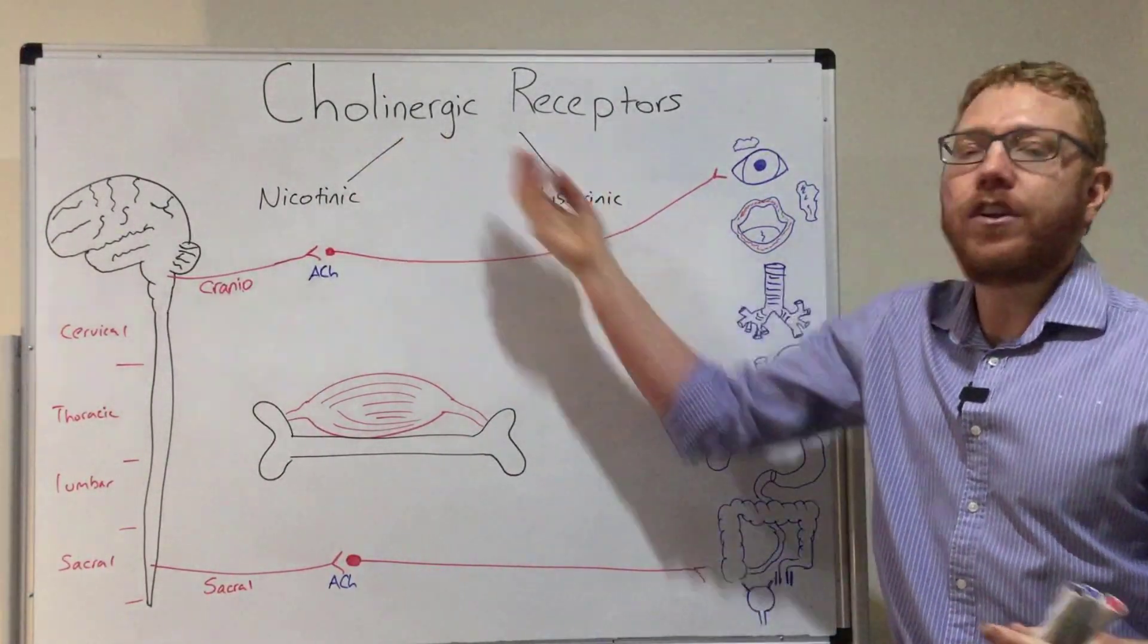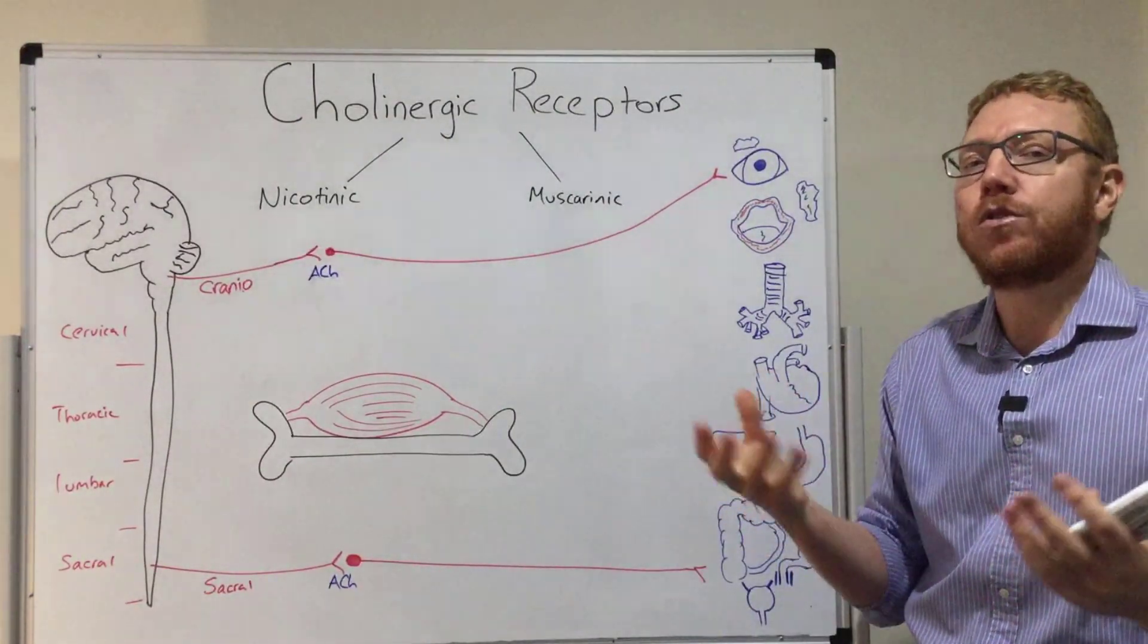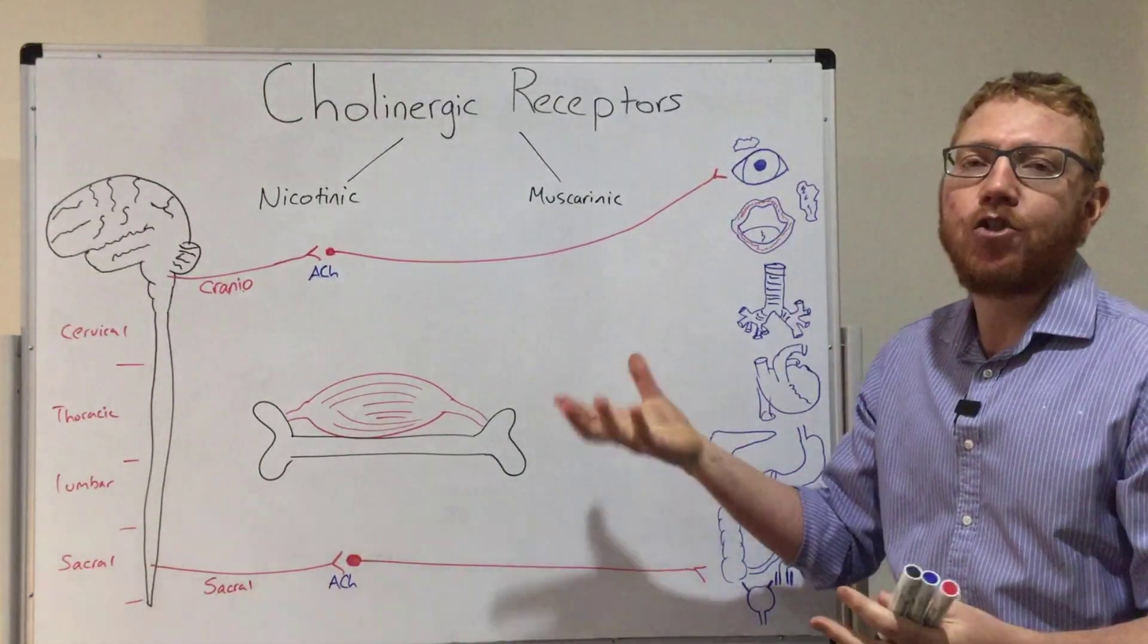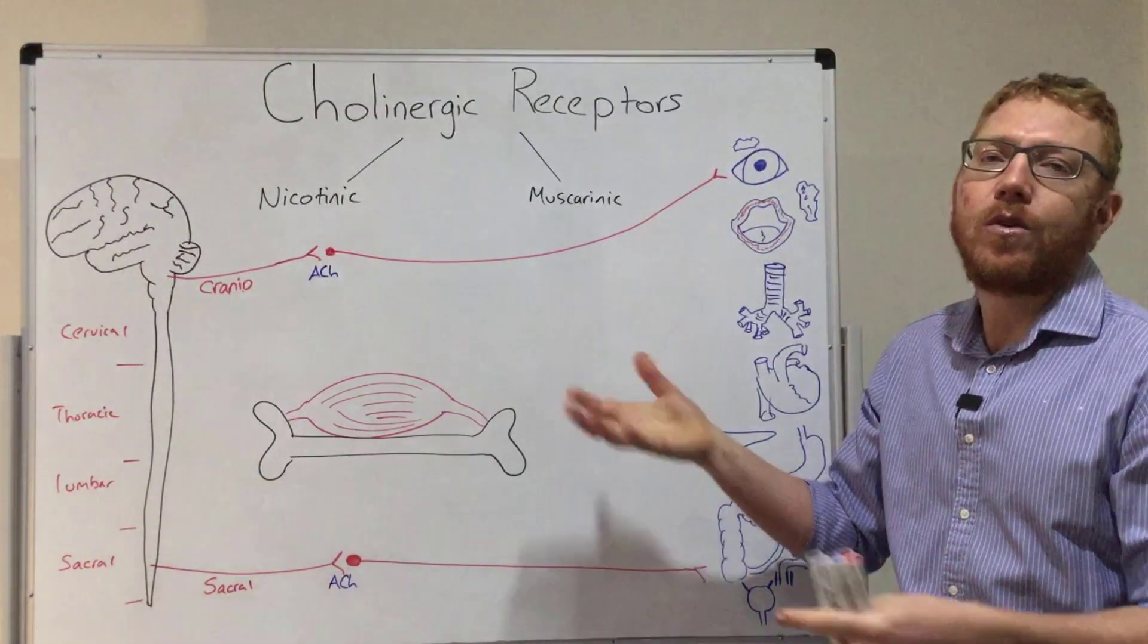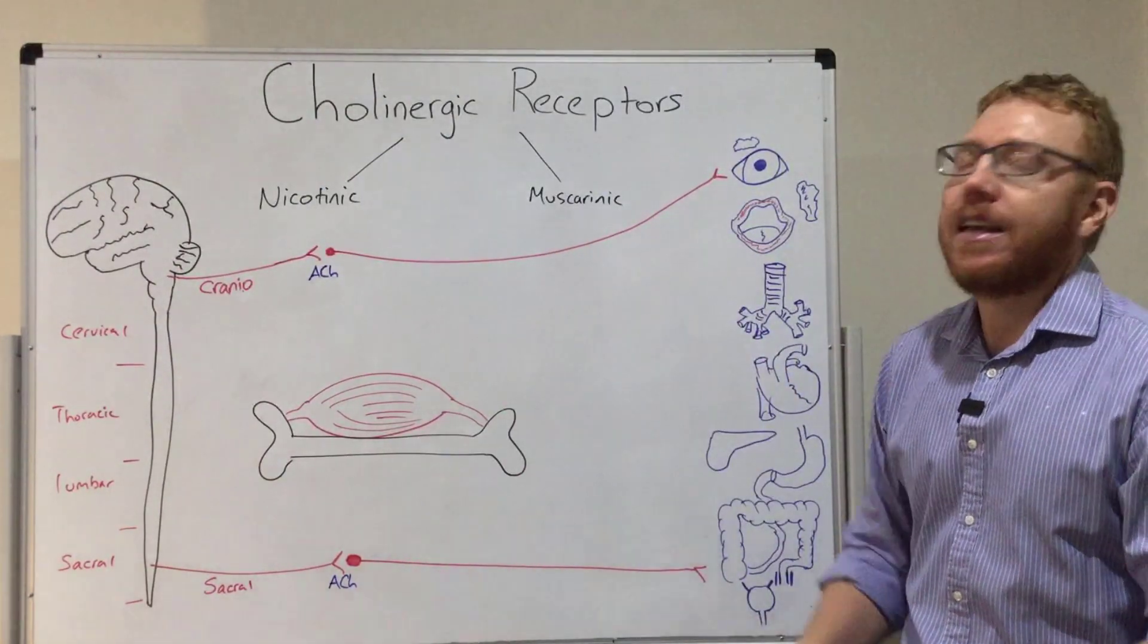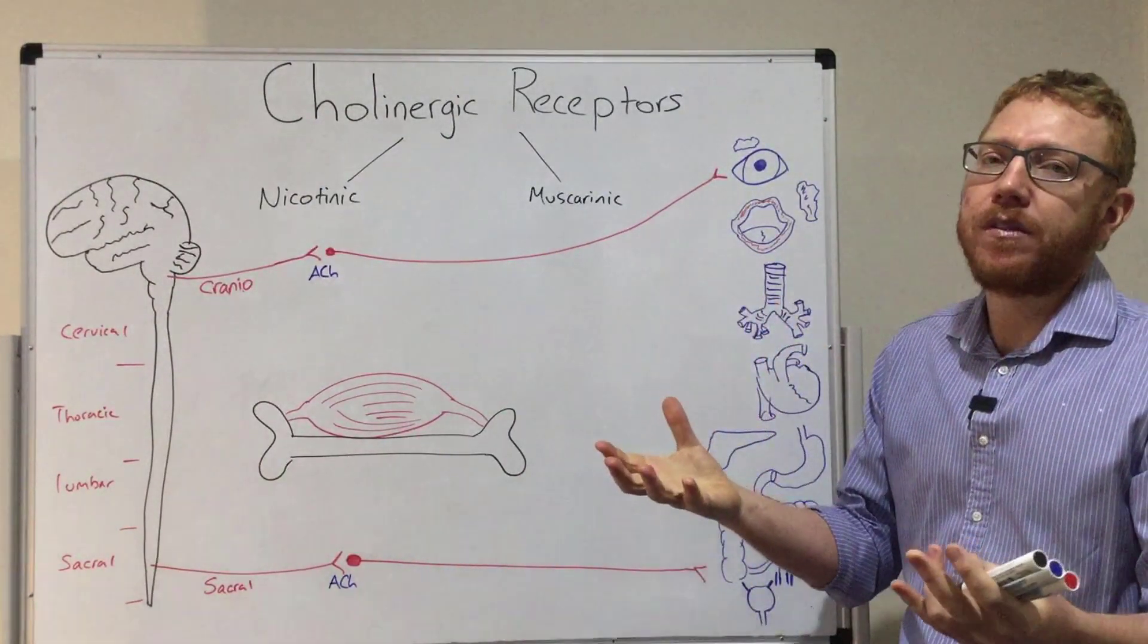So cholinergic essentially means stimulated by acetylcholine. This lecture follows Mike's lecture on adrenergic receptors, which we saw in the sympathetic nervous system. But this particular group is found within the parasympathetic nervous system.